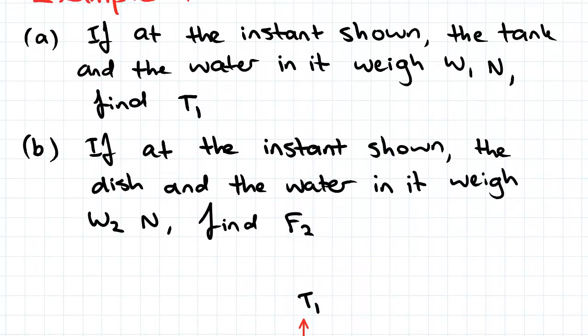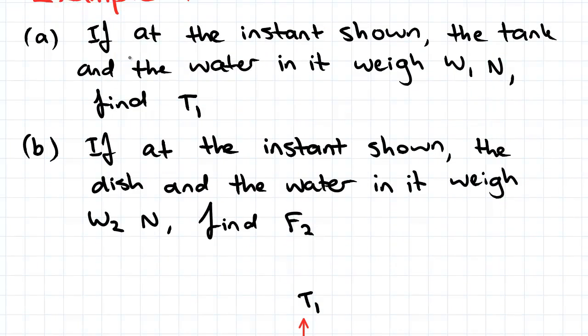In part A, which we're going to carry out in this video, we've been asked to find what the tension is. So because there is a flow out of the tank, there's going to be some variance of tension felt by the cable holding the tank up and it will keep varying until the tank is empty.